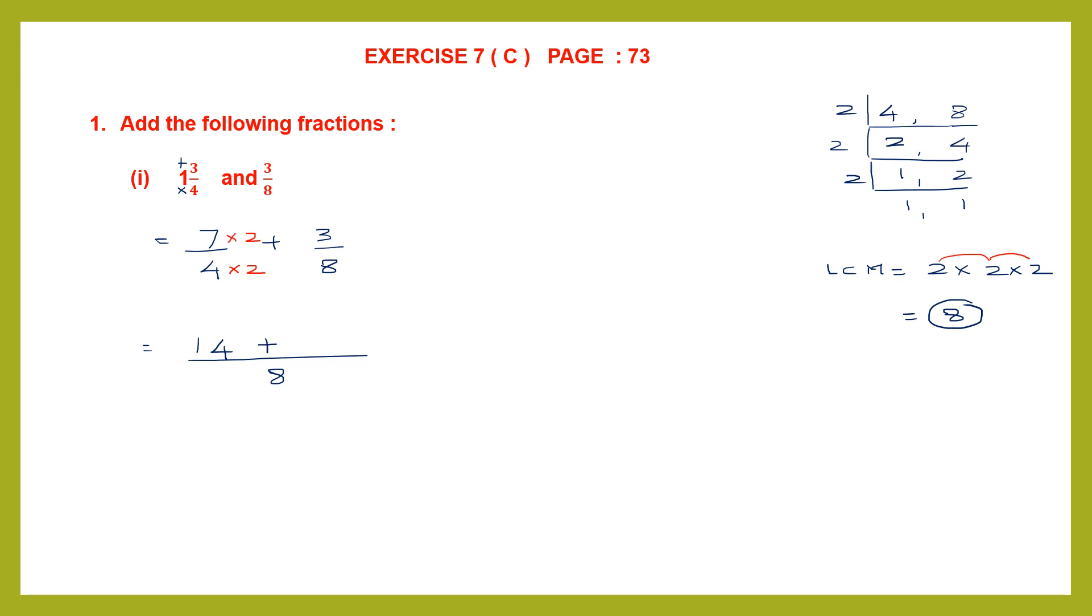Now plus, let's go to the second fraction. Here it is 3 by 8. 8 into 1 is 8. So let's write that, 8 into 1 is 8. So multiply the numerator also by 1. 3 times 1 is 3. So what do we have here? 14 plus 3. 14 plus 3 is 17. 17 by 8.